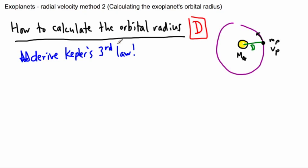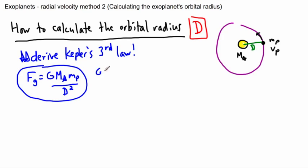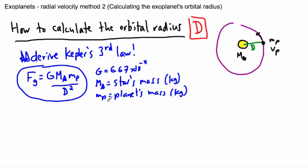All we have to do is derive Kepler's third law. So we start off by writing Newton's universal law of gravitation. The gravitational force of attraction between two objects is equal to this constant, G, times the mass of a star, times the mass of the planet, divided by their distance squared, the orbital radius. Maybe it's a good idea just for the sake of completeness to explain what everything is very quickly. So G is just a constant, it's 6.67 times 10 to the negative 11. M star is the star's mass, and that will be given in kilograms. We have mp, that's the planet's mass, also given in kilograms.